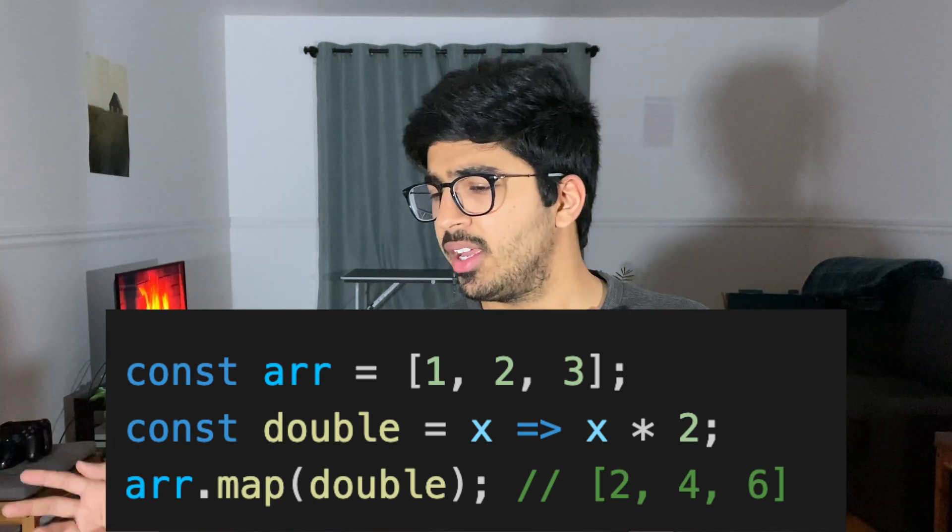Now coming to the map function, this is also a very important JavaScript function. Let's say you had an array of three elements, one, two, and three, and maybe you wanted in the end, the double of your array. So basically, you wanted two, four, and six. Now in that case, you can either run a for loop, go through each element in your array, multiply it by two, push it into another array. In the end, you have an array with doubles of your initial array.